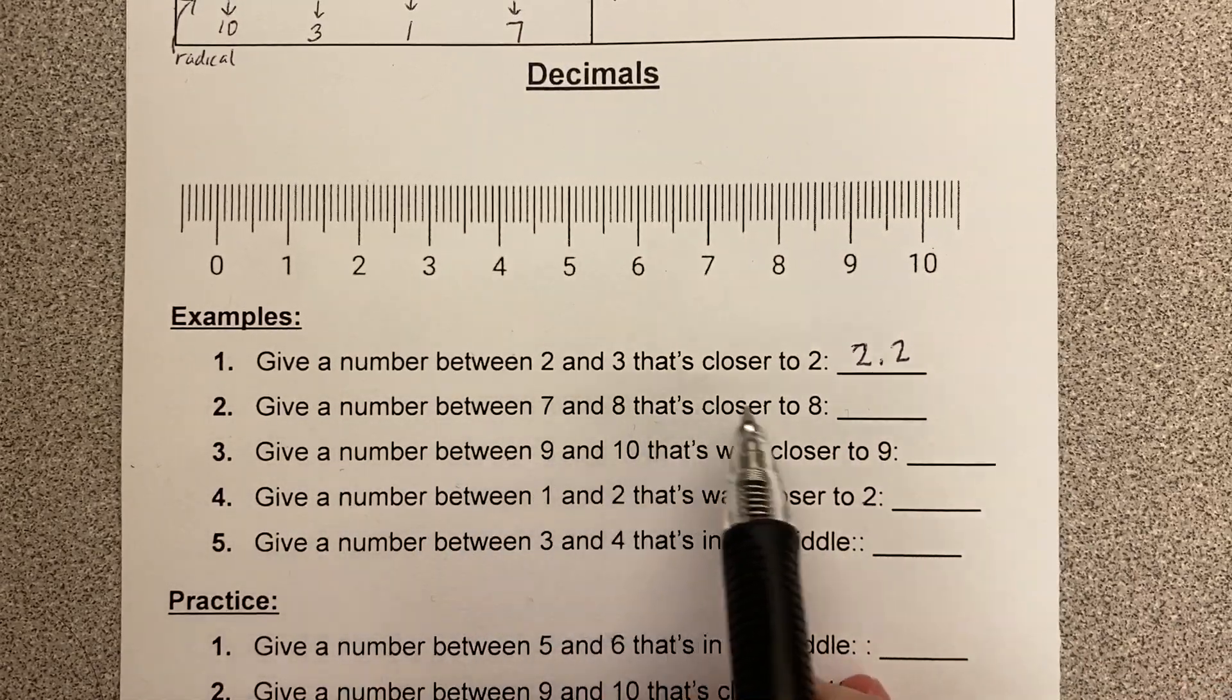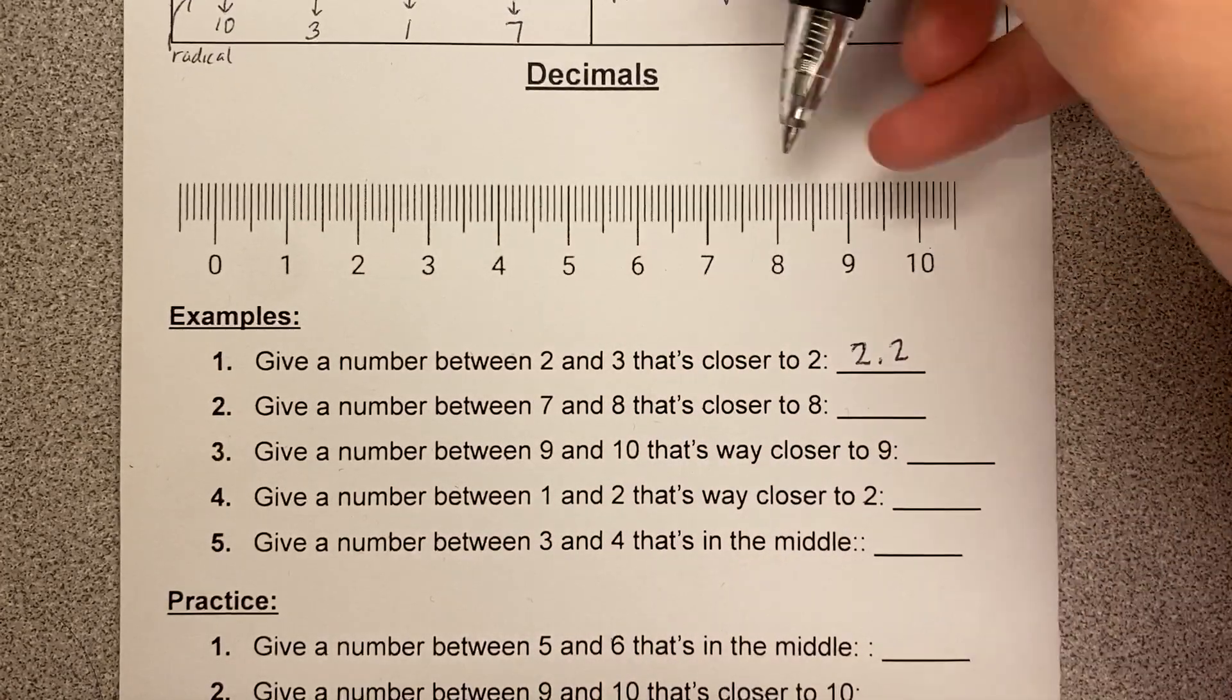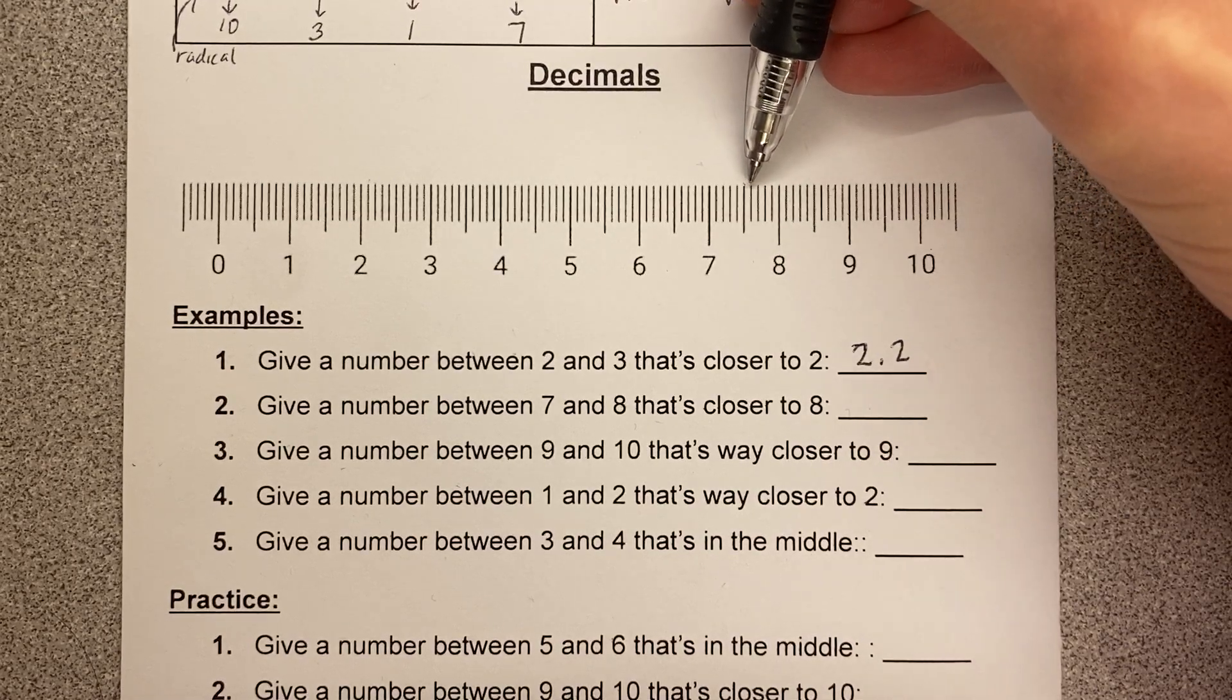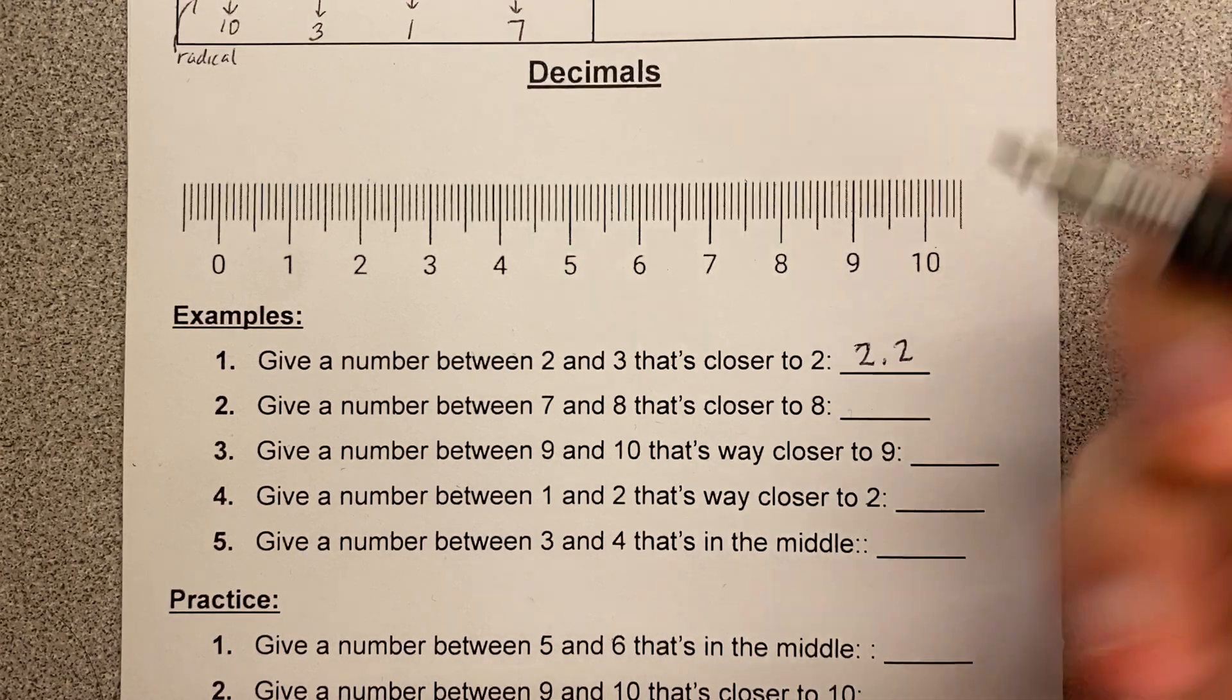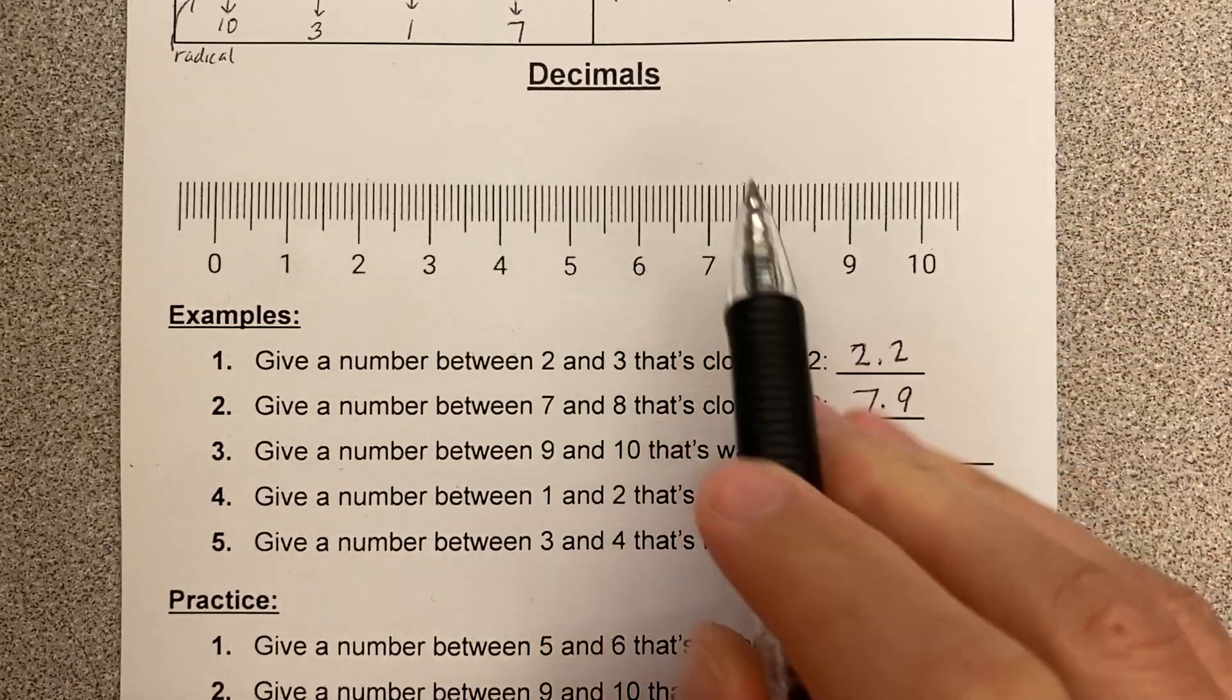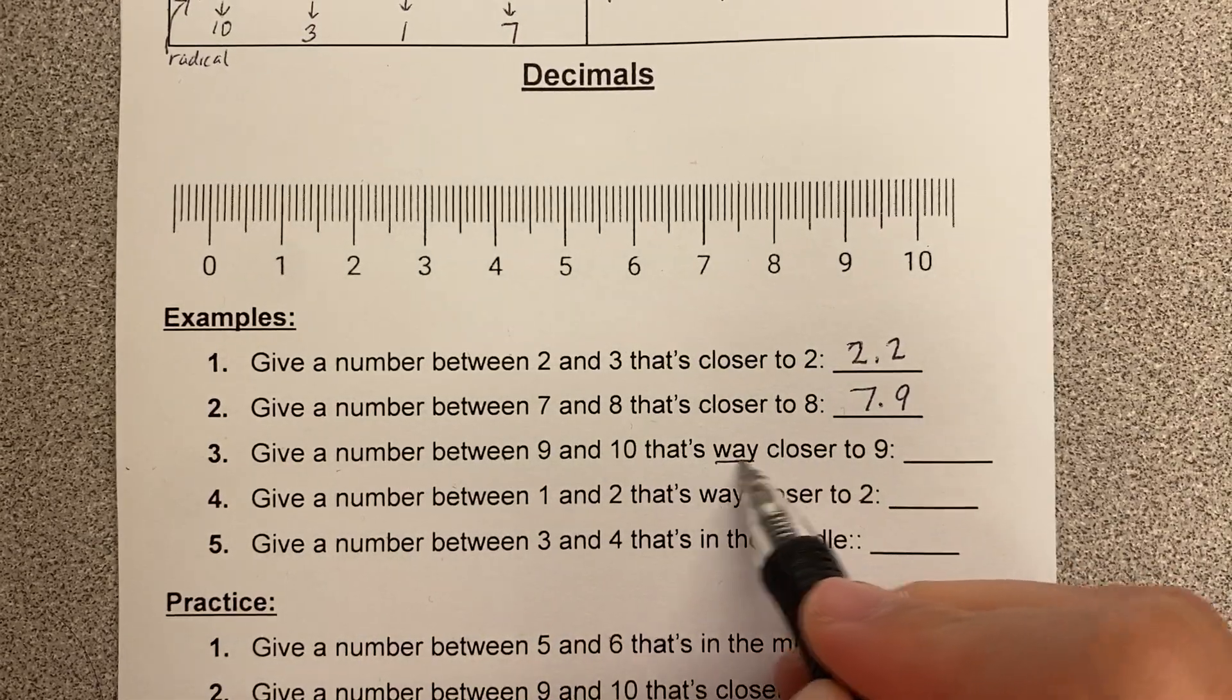This one says give a number between 7 and 8 that's closer to 8. So here's 7, here's 8. Now this time I want to be between 7 and 8, but it's got to be closer to 8. So like over here wouldn't work. Over here is right in the middle. So here your answers could be 7.6, 7.7, 7.8, 7.9. Those are your possibilities. I'm going to put 7.9, but again, any of these would be correct answer. 7.6, 7.7, 7.8.